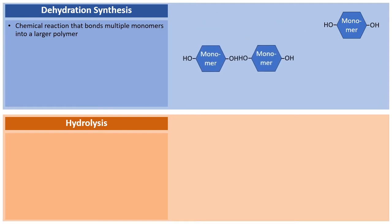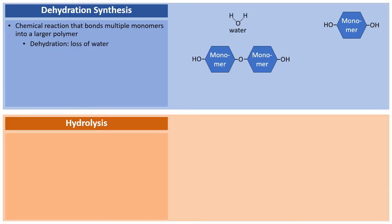In a dehydration synthesis reaction, two monomers are brought together. It's called dehydration because two H's and an O — the formula for water, H₂O — are removed in the process. Watch: a water molecule is lost and those two monomers are bonded together, built or synthesized to make a larger molecule — that's where the word 'synthesis' comes from.